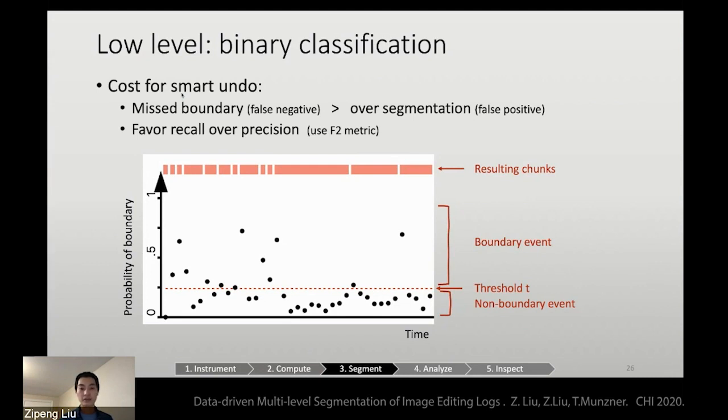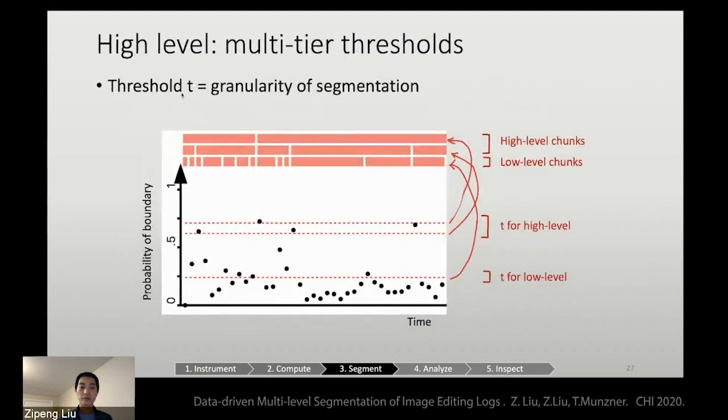After getting these low-level chunks, we're actually reusing this threshold value as the granularity of segmentation. We choose multiple different thresholds above the lowest one, such that it constructs high-level chunks. It is guaranteed that low-level chunks will fall into high-level chunks.